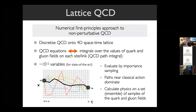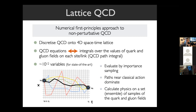The only first principles approach to studying QCD non-perturbatively is numerical — it's called lattice field theory or lattice QCD. The idea is quite straightforward: you discretize the equations of QCD onto a four-dimensional spacetime lattice or grid. The QCD path integral that you need to solve to compute an observable then corresponds to integrals over the values of the quark and gluon fields on each site or link of this four-dimensional lattice. This is an integration problem in something like 10^12 to 10^15 variables for state-of-the-art calculations. We evaluate these integrals by importance sampling — paths near the classical action are dominant, so you sample the dominant paths more and others less, then compute observables on your set of samples.